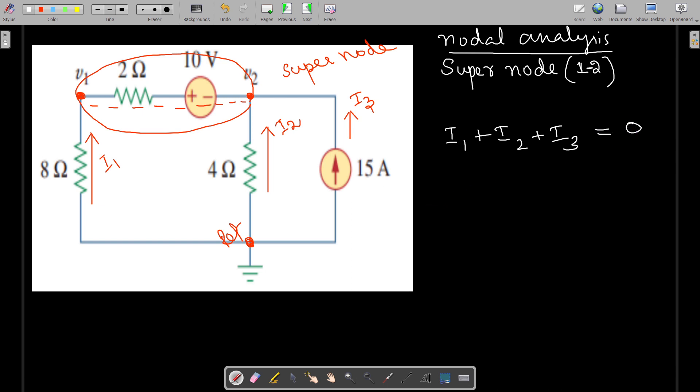Instead of i1 I can write (0 - v1) divided by 8, because it starts from here and ends here, plus i2 which is (0 - v2) divided by 4 ohms, plus here the current itself is 15 amps. That equals 0.